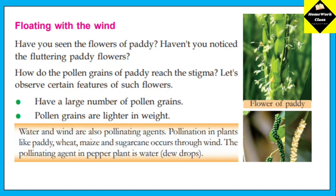Water and wind are also pollinating agents. Pollination in plants like paddy, wheat, mace, and sugar cane occurs through wind. The pollinating agent in the pepper plant is water.